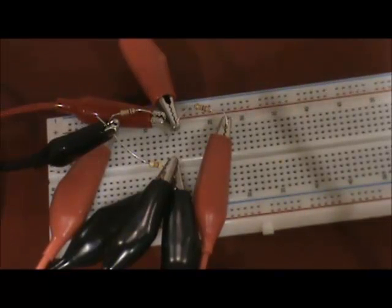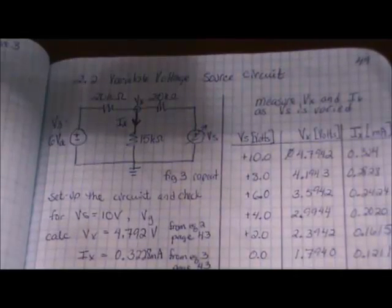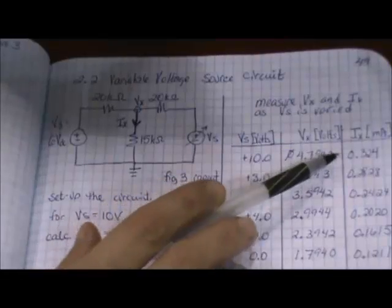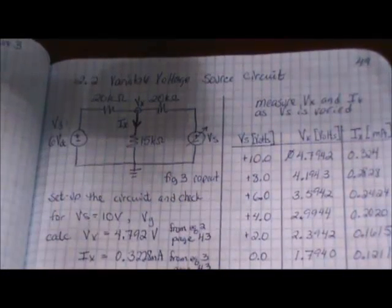check that the data point where Vx is set to 10 volts is the correct value. Once you have verified that this test point is correct by comparing your measured value to the prelab, collect the rest of your data.